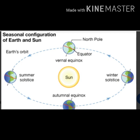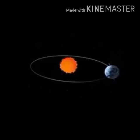On two days in a year, the Sun shines vertically over the equator. On these days, day and night are of equal length throughout the world — this is called the equinox. Due to the revolution of the Earth, we have four seasons on Earth.